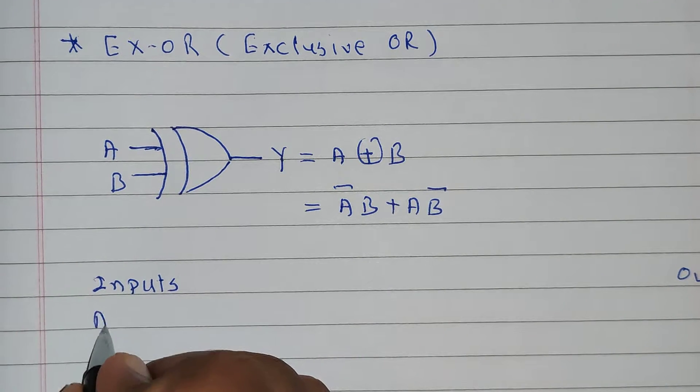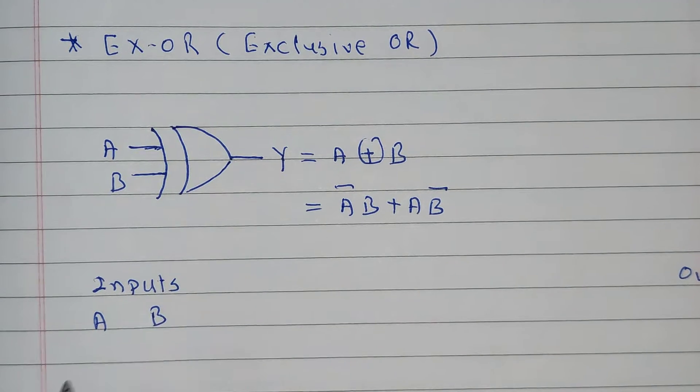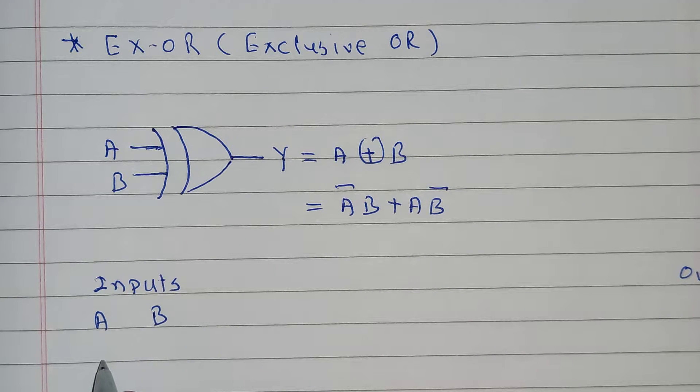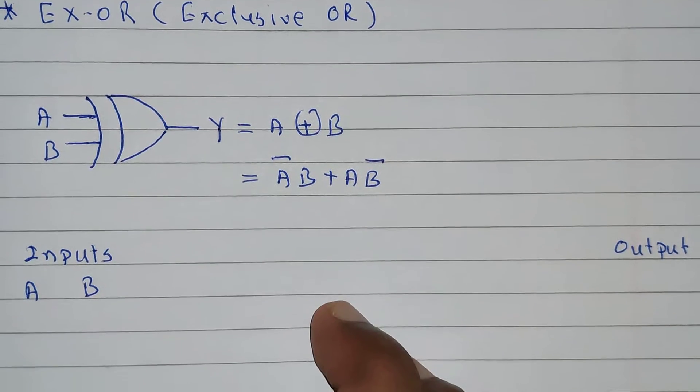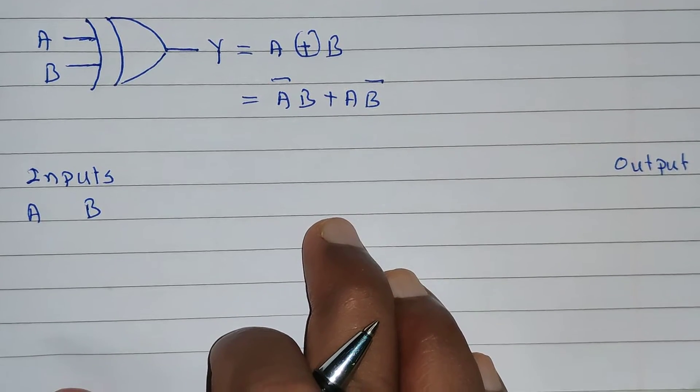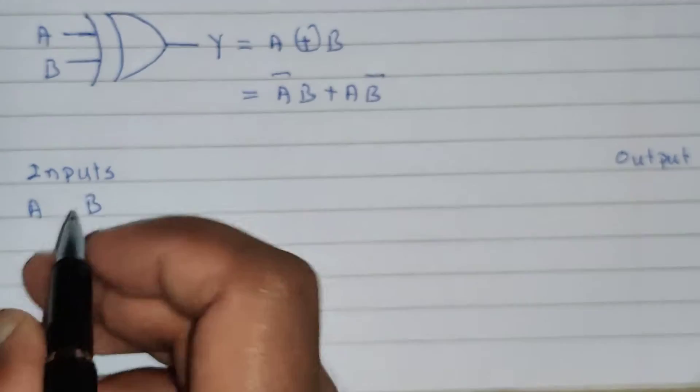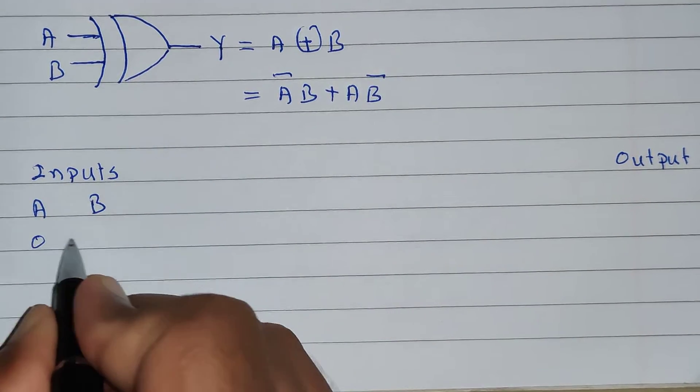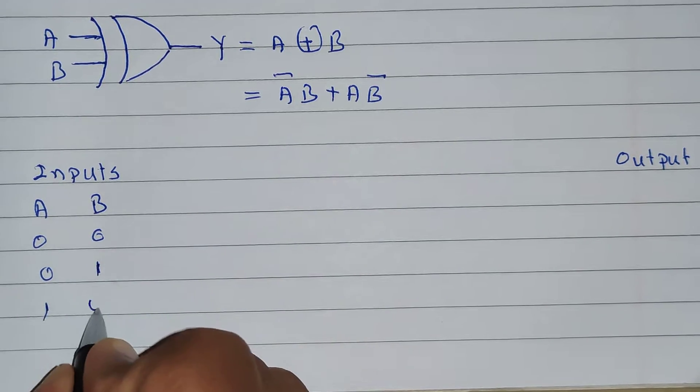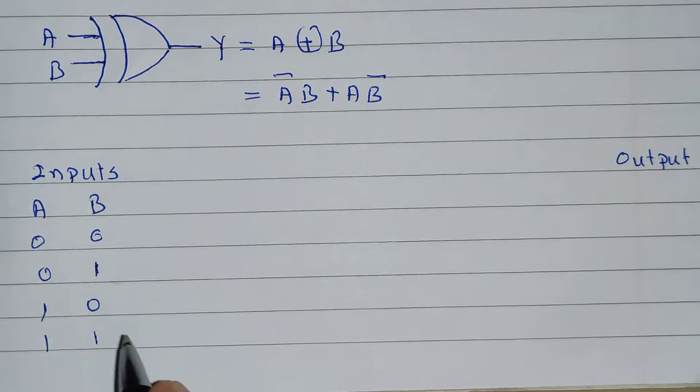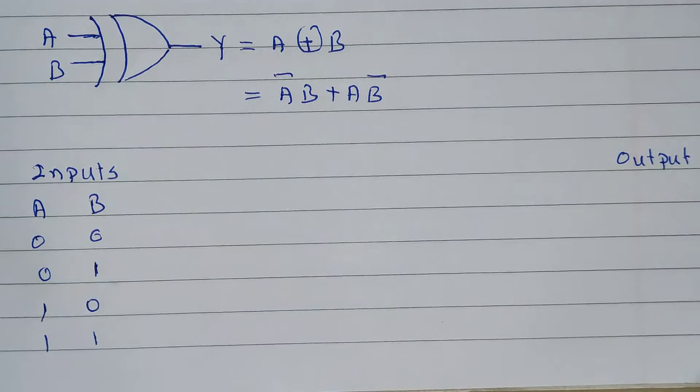Inputs are A and B. So, values of inputs will be 0 0, 0 1, 1 0 and 1 1. These are unique possibilities of inputs.